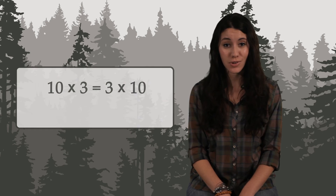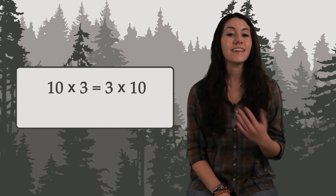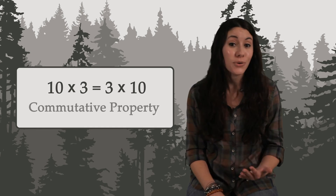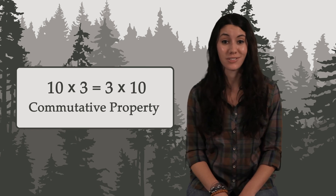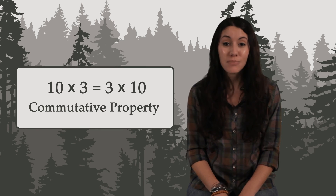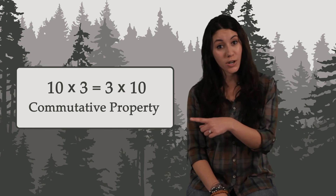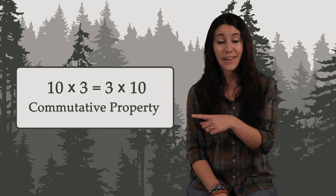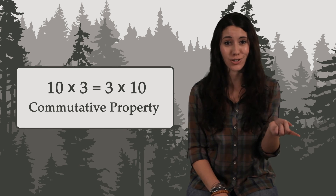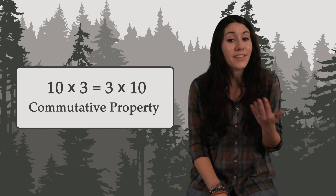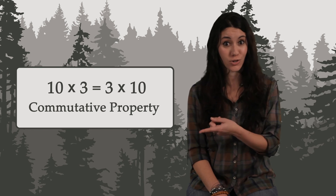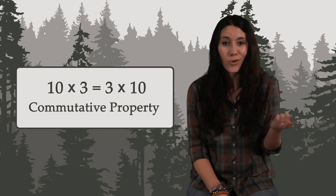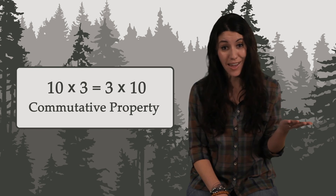So 10 times 3 equals 3 times 10. This is called the commutative property, and reminds us of the word commute. A commute is driving to work in one direction and then driving back home in the other direction. And the commutative property says you can multiply in one direction or the other — the result is the same.